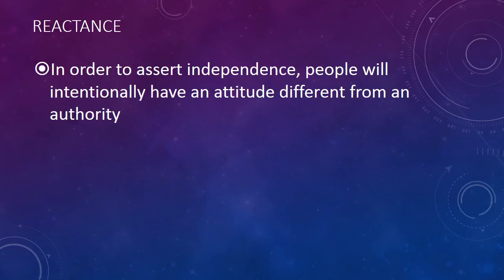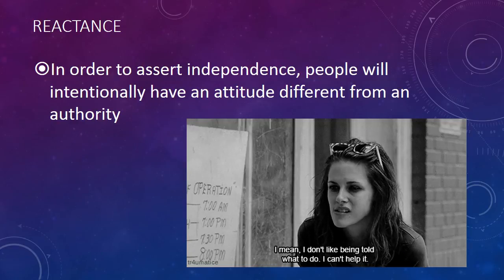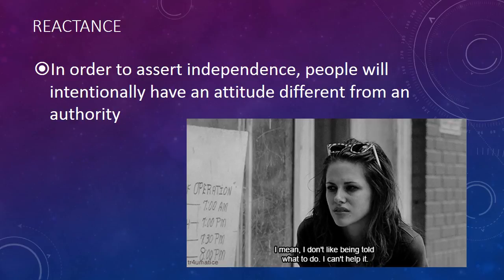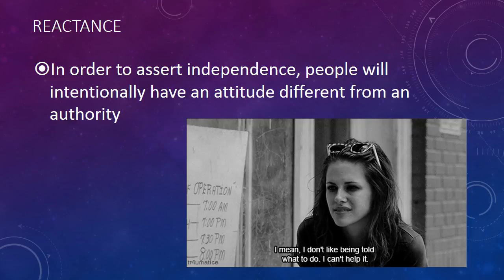Lastly, reactance occurs when people want to have independence. If somebody tells them what to do or what to say, they want to continue to be independent, so they will actually do the opposite thing on purpose to assert their independence. This GIF is a great example — she's saying she's not going to do what somebody else tells her to do; it doesn't make her feel good. So she's talking about reactance.